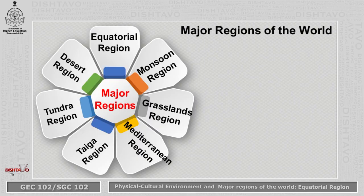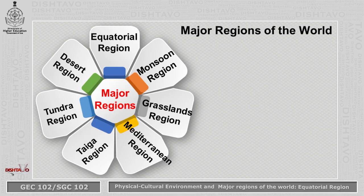The world can be divided into various regions. The major regions of the world include the equatorial region, the monsoon region, the grassland region — which has two types: tropical grasslands and temperate grasslands — the Mediterranean region, the Taiga region, the Tundra region, and the desert region.